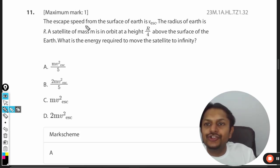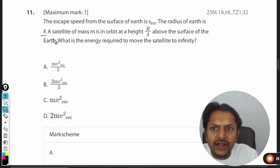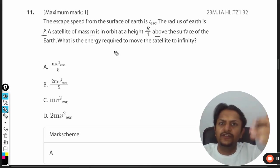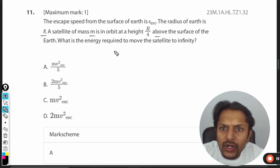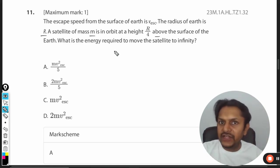Let's see what's in this question. The escape speed from the surface of Earth is v_esc. The radius of Earth is R, and a satellite of mass m orbits at height R/4 above the surface of Earth. What is the energy required to move the satellite to infinity?